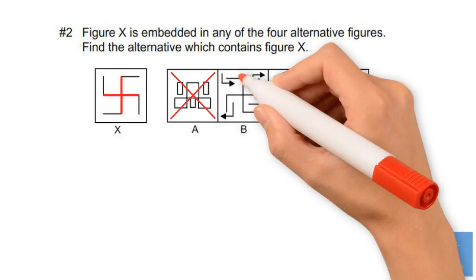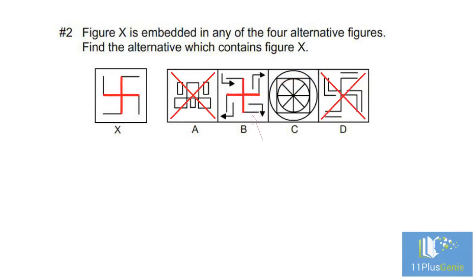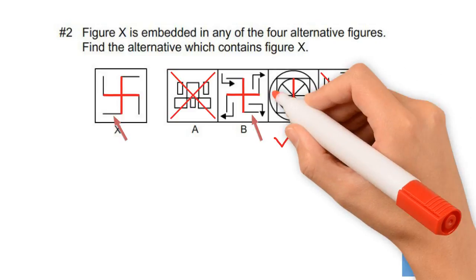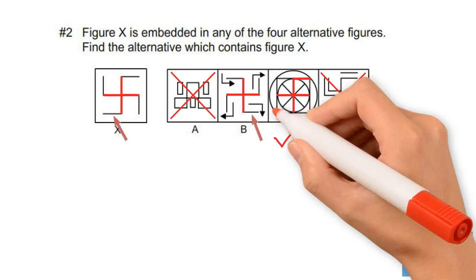In figure B, the shape is a reflection of the answer figure, so we can eliminate B. The correct answer is C, and here is the shape embedded in the diagram.